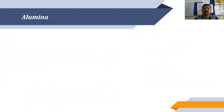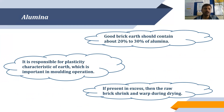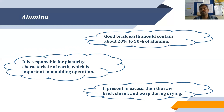Next is alumina. A good brick earth should contain about 20 to 30% alumina. It is responsible for the plasticity characteristics of the earth, which is important in the molding operation. If present in excess, the raw brick will shrink and warp during drying — meaning beyond 30%, when we are drying the bricks, they become twisted and deformed, losing their shape.